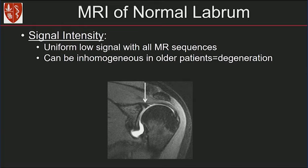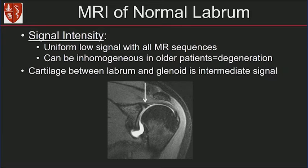Here we have a coronal MR image showing the superior labrum with homogeneous dark signal intensity. The cartilage between the labrum and the glenoid is intermediate signal. You can see this normal cartilage undercutting underneath that labrum, and this should not be misinterpreted as a labral tear.